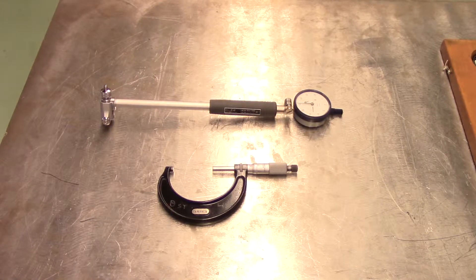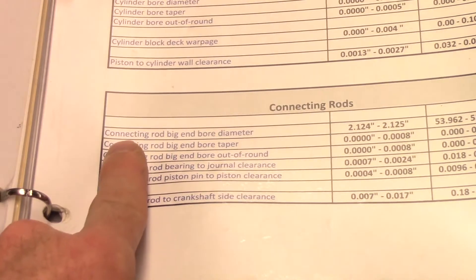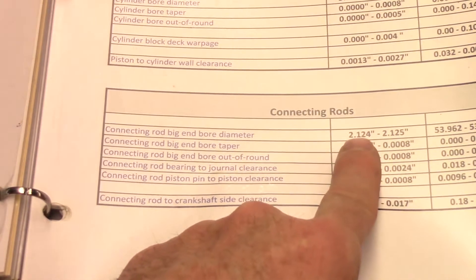Remember, to measure a bore for size, you must first zero the bore gauge with a micrometer to the size that the bore is supposed to be, as stated in the service information.